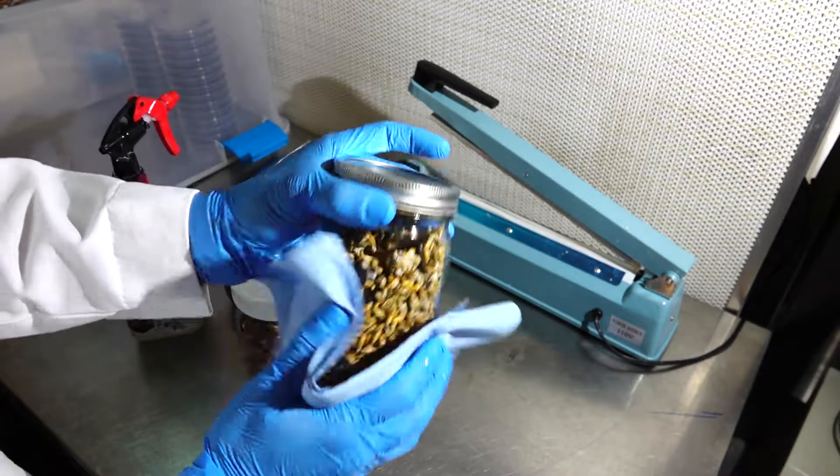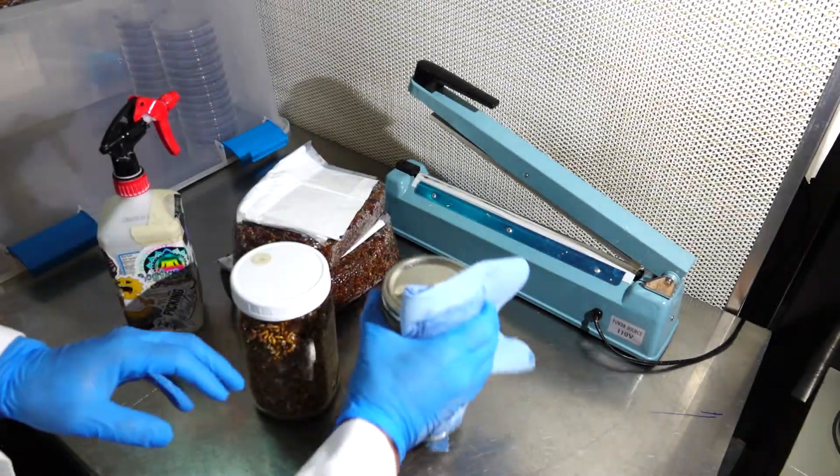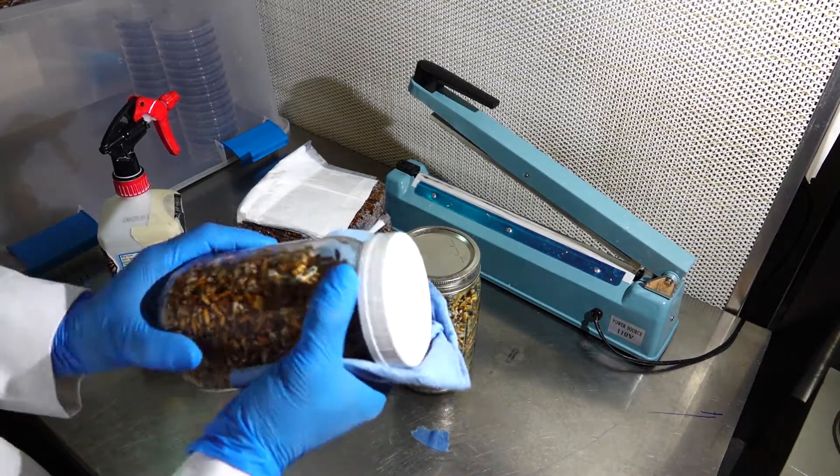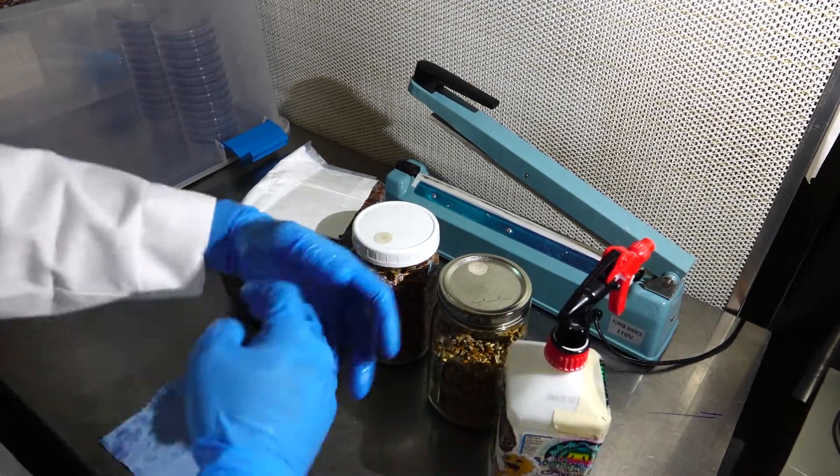The next step of the process is going to be wiping down your jars with isopropyl alcohol. You want to make sure that they are as sanitized as they possibly can be so that you don't introduce any bacteria from outside of the jar into your freshly sterilized grains.